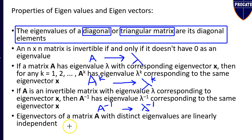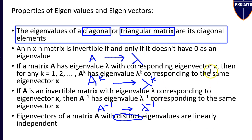The last property is that eigenvectors of a matrix A with distinct eigenvalues are linearly independent. Distinct means unique or different. Of all these properties, the property useful in solving the current question is property 1 — the eigenvalues of a diagonal or triangular matrix are its diagonal elements.